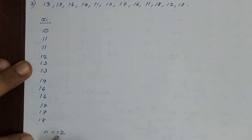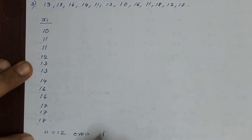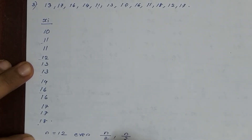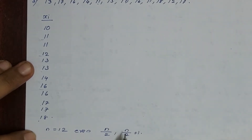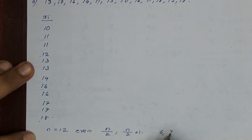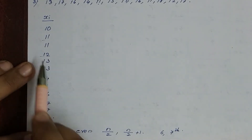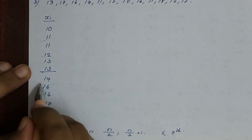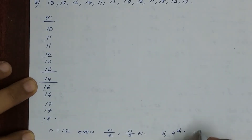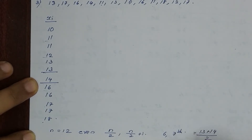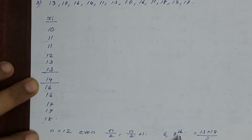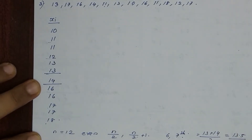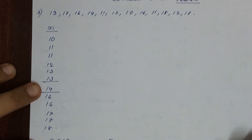Since n equals 12, this is an even number. So the median is the average of the (n/2)th observation and the (n/2 + 1)th observation. The 6th observation is 13 and the 7th observation is 14. So median equals (13 plus 14) divided by 2, that is equal to 13.5.